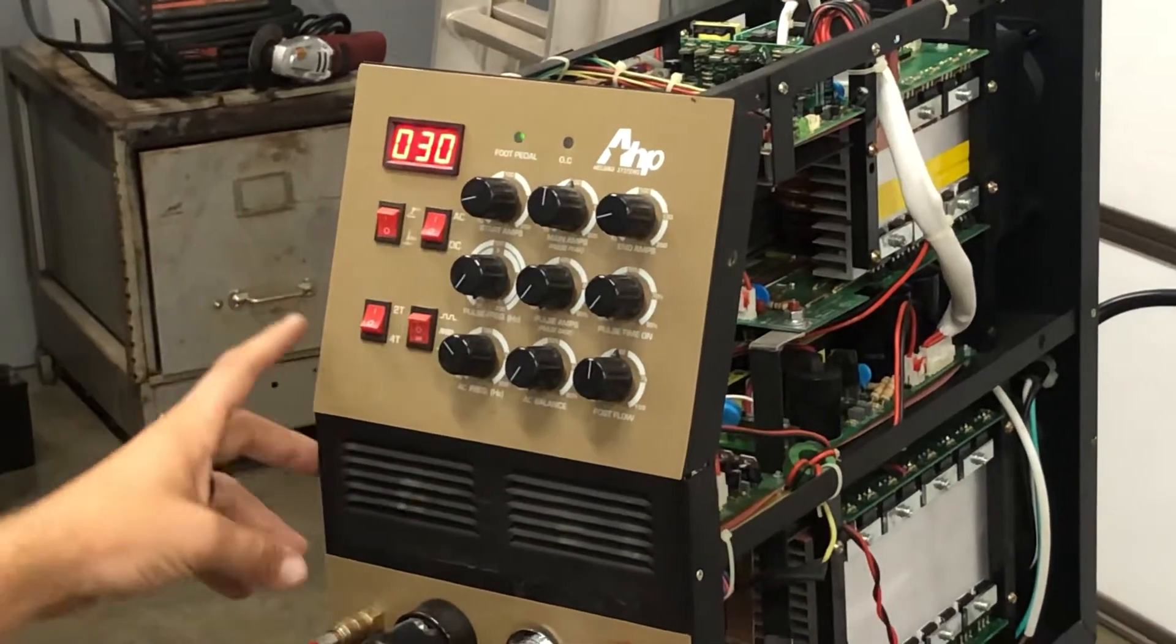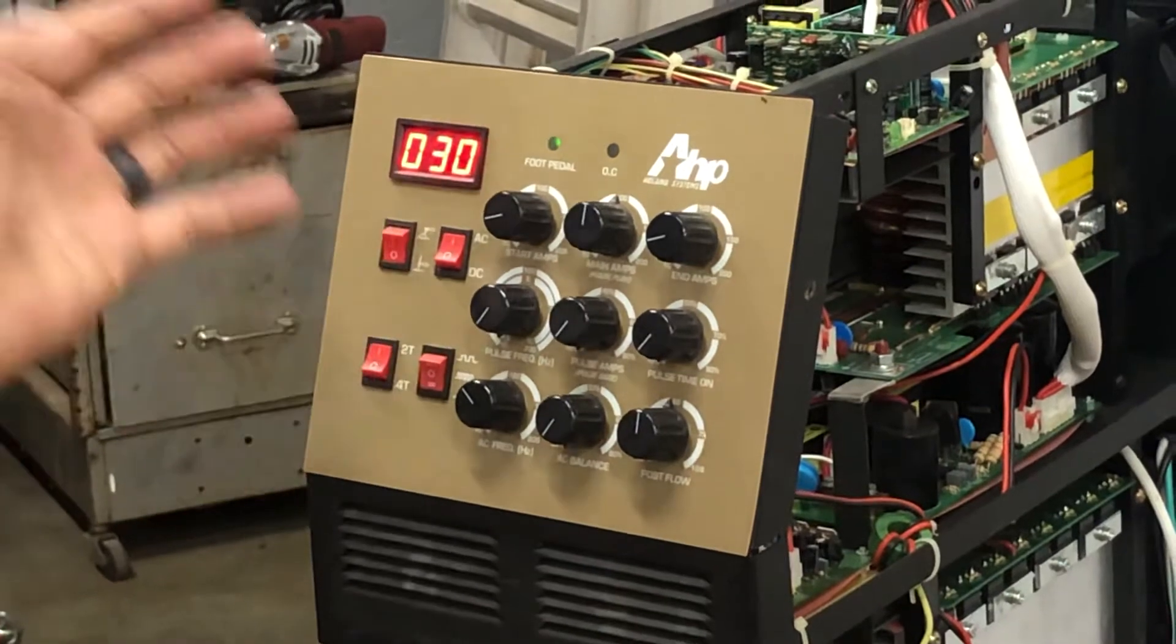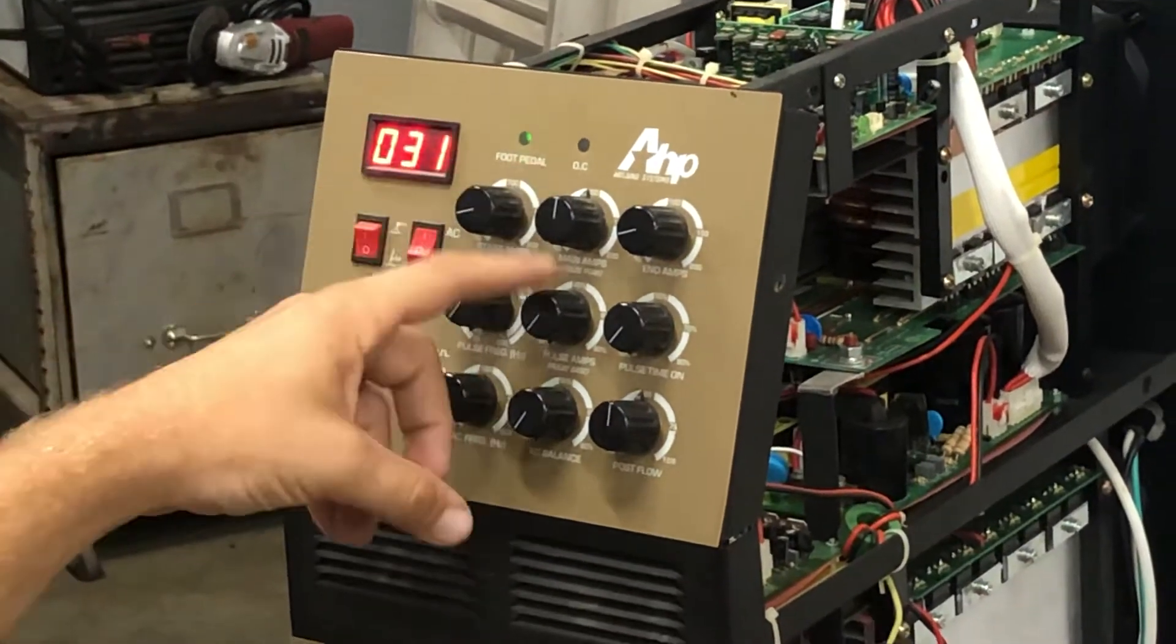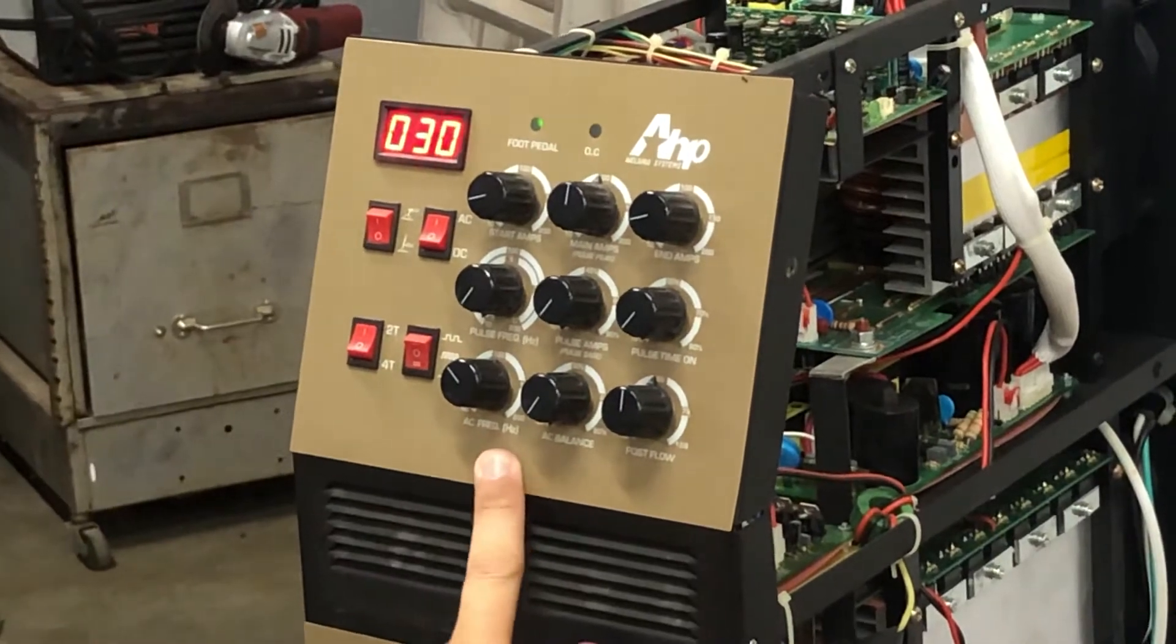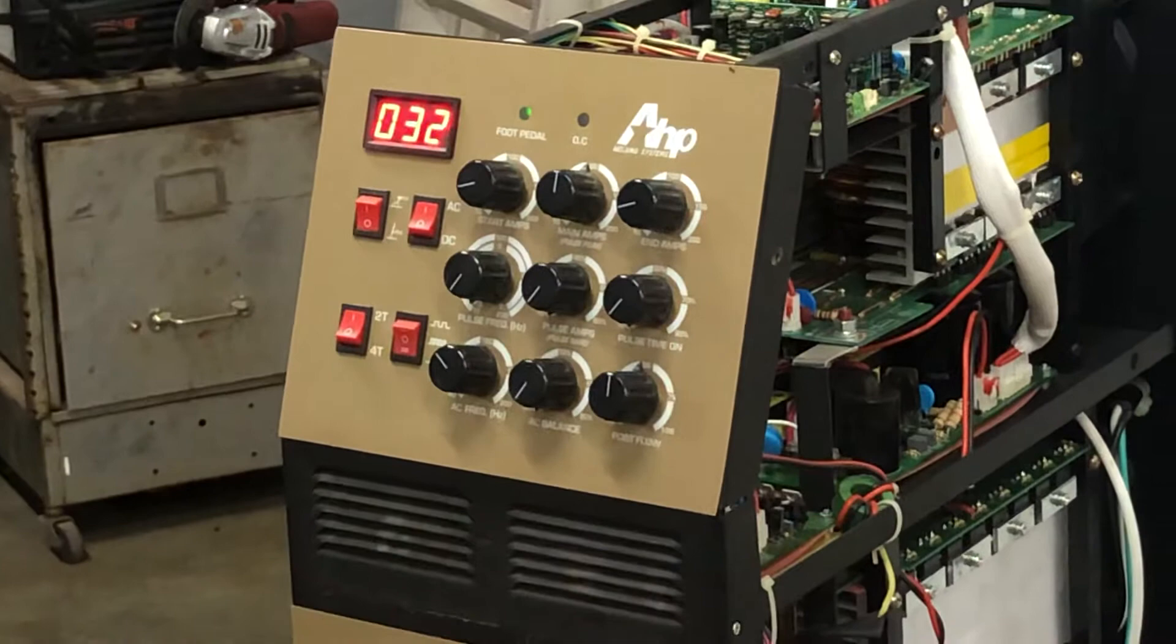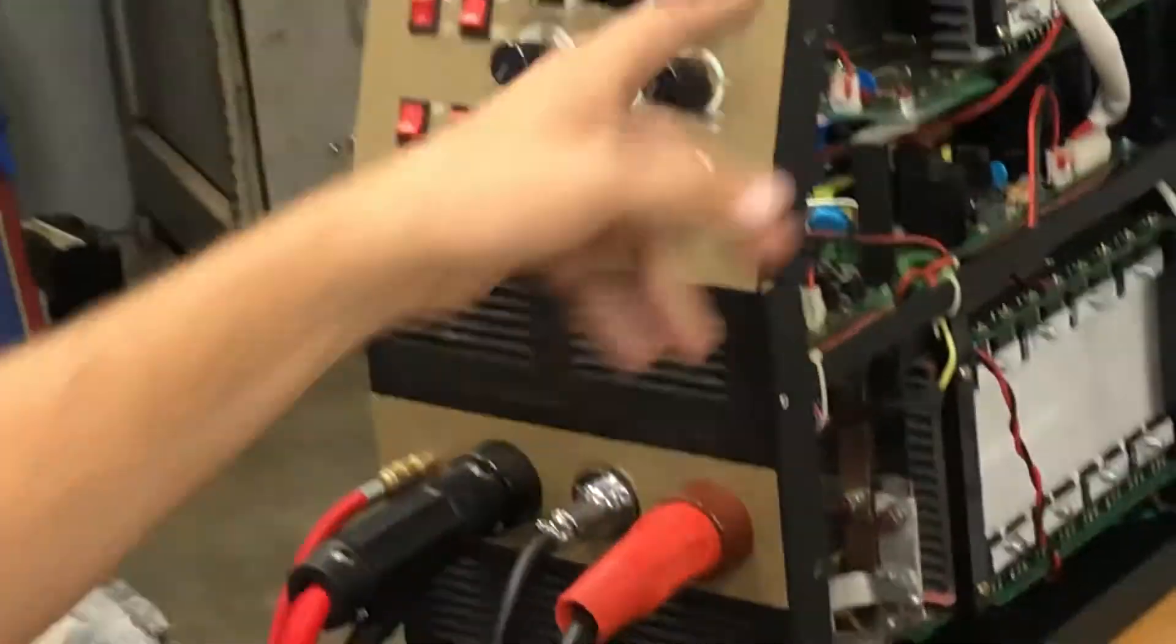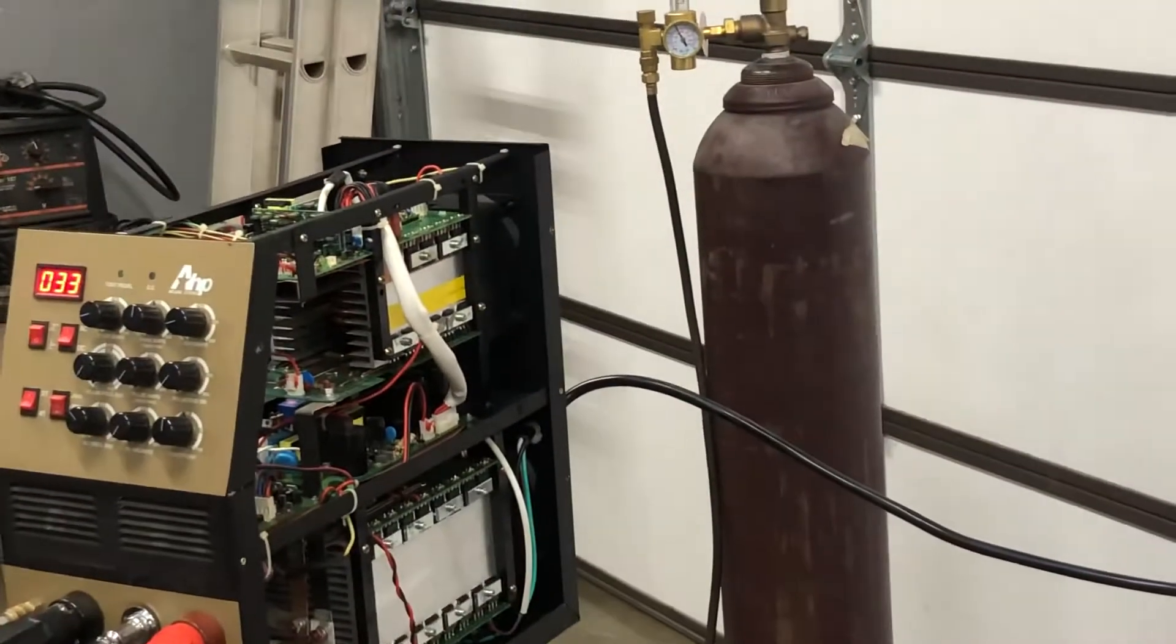TIG AC 2T - start amps are 25, main amps are 100, end amps are about 25 AC. Frequency is 80, AC balance all the way off, post flow is on 5 seconds, gas is 15.